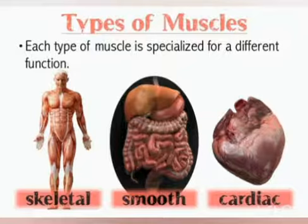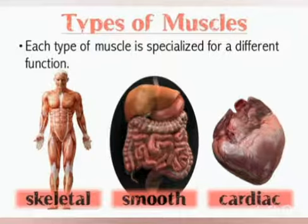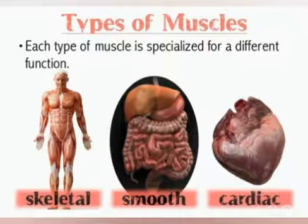In a human body there are three types of muscles: skeletal muscles, cardiac muscles, and smooth muscles. Skeletal muscles help in movement — these muscles are attached to the skeletal system, so muscles in the arms and legs are examples. These are the only type of muscles which we can control directly.